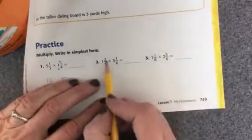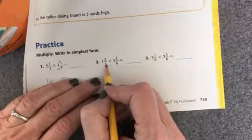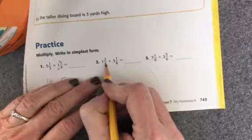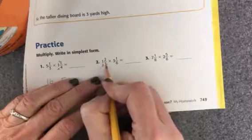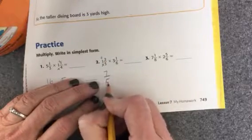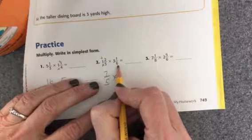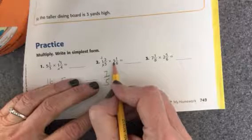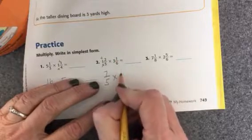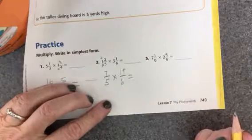Let's look at the next one: one and two-fifths times three and one-sixth. The first thing I need to do is change one and two-fifths into all fifths. I do five times one is five, plus two is seven, so I'll have seven-fifths. Then I need three and one-sixth divided into sixths — six times three is 18, plus one more is 19, so I'll have 19-sixths. Then I multiply and get the answer.